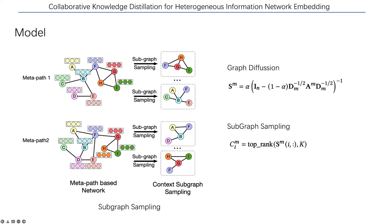To conclude, in this paper we have made the first attempt to explicitly model the correlation between metapaths in HIN embedding with the proposed Collaborative Knowledge Distillation framework. By modeling regional and global knowledge in each metapath, our approach can efficiently preserve local and global patterns in the final embedding. Extensive experiments including node classification, link prediction, and ablation studies are conducted on six real-world HINs, demonstrating the effectiveness of our proposed framework. Thank you for watching — if you have any questions, please contact us by email or visit my homepage.